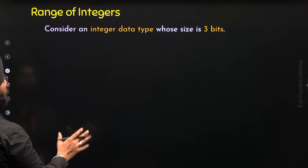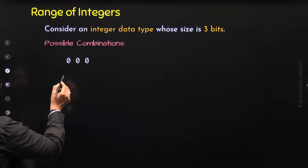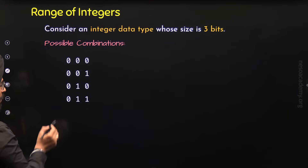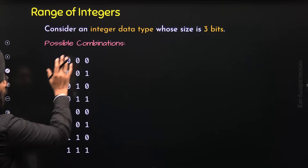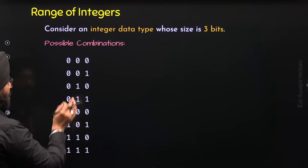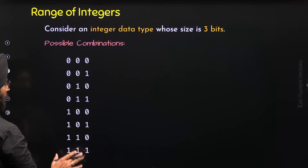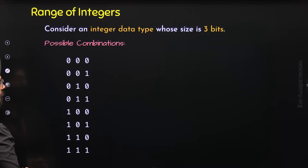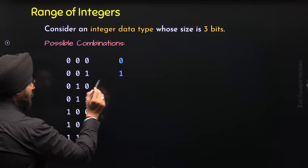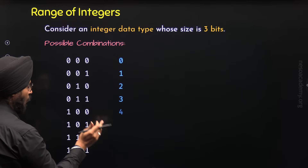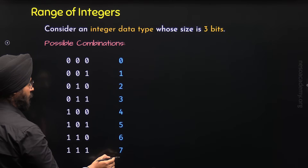Let's consider the different possible combinations of binary numbers from 3 bits. The possible combinations are 000, 001, 010, 011, 100, 101, 110, and 111. Now let's assume that these binary numbers are representing only positive integers. So 000 is 0, 001 is 1, 010 is 2, then we have 3, 4, 5, 6, 7. We are getting this range of positive integers from these binary numbers.